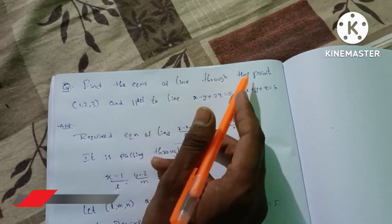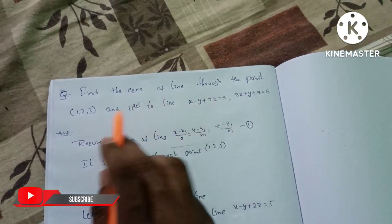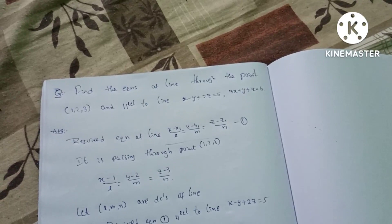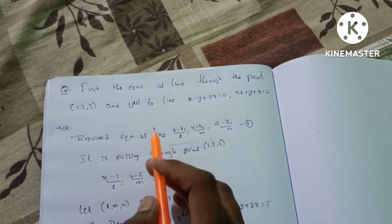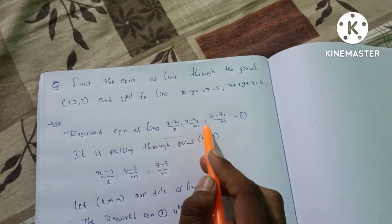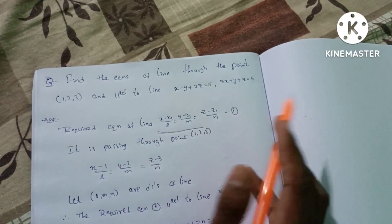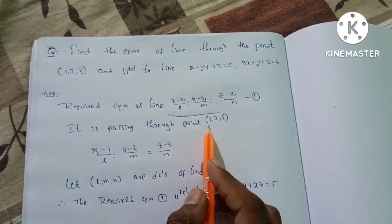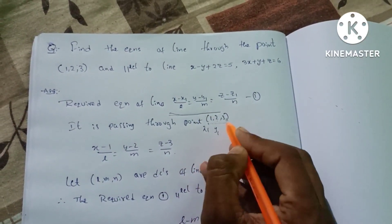Find the equation of the line through the point (1, 2, 3) and parallel to the given line. For the required equation, we need the point: x1 = 1, y1 = 2, z1 = 3.